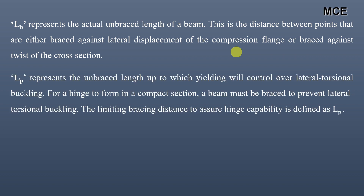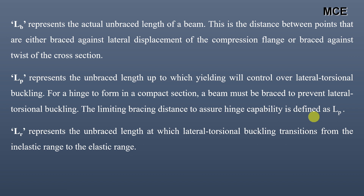LP represents the unbraced length up to which yielding will control over lateral torsional buckling. For a hinge to form in a compact section, the beam must be braced to prevent lateral torsional buckling, and the limiting bracing distance to ensure hinge capability is defined as LP. LR represents the unbraced length at which lateral torsional buckling transitions from the inelastic range to the elastic range.